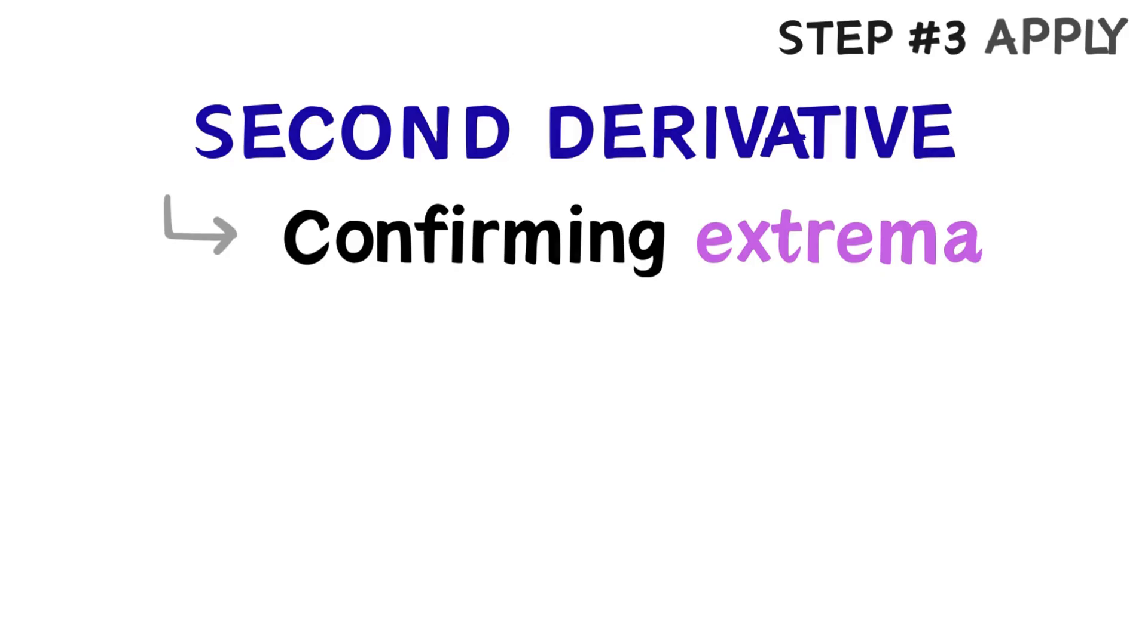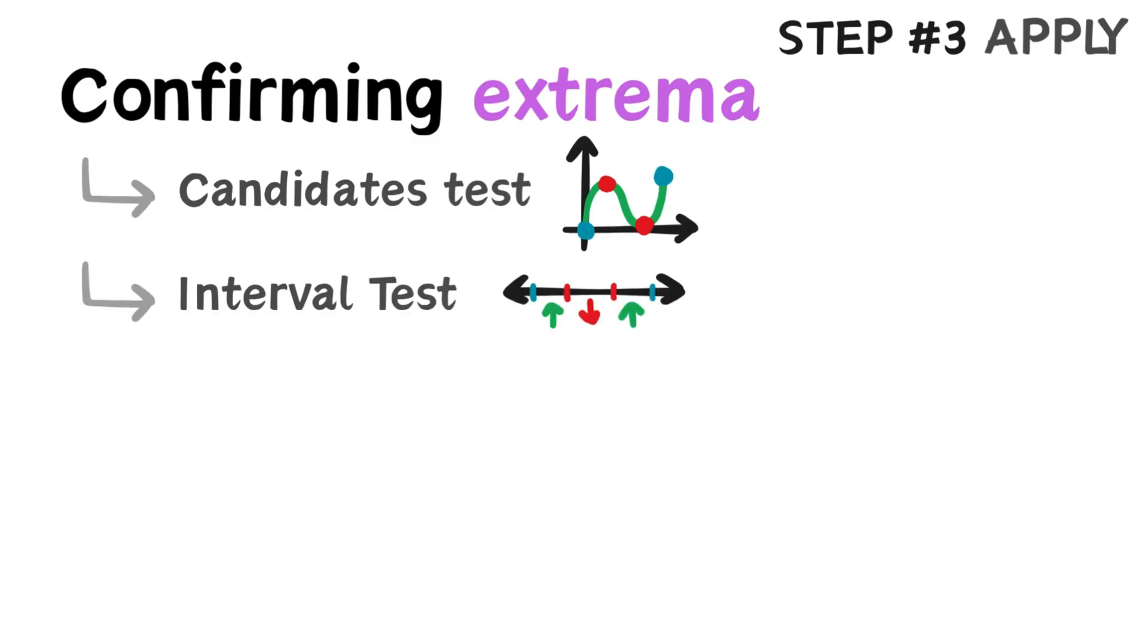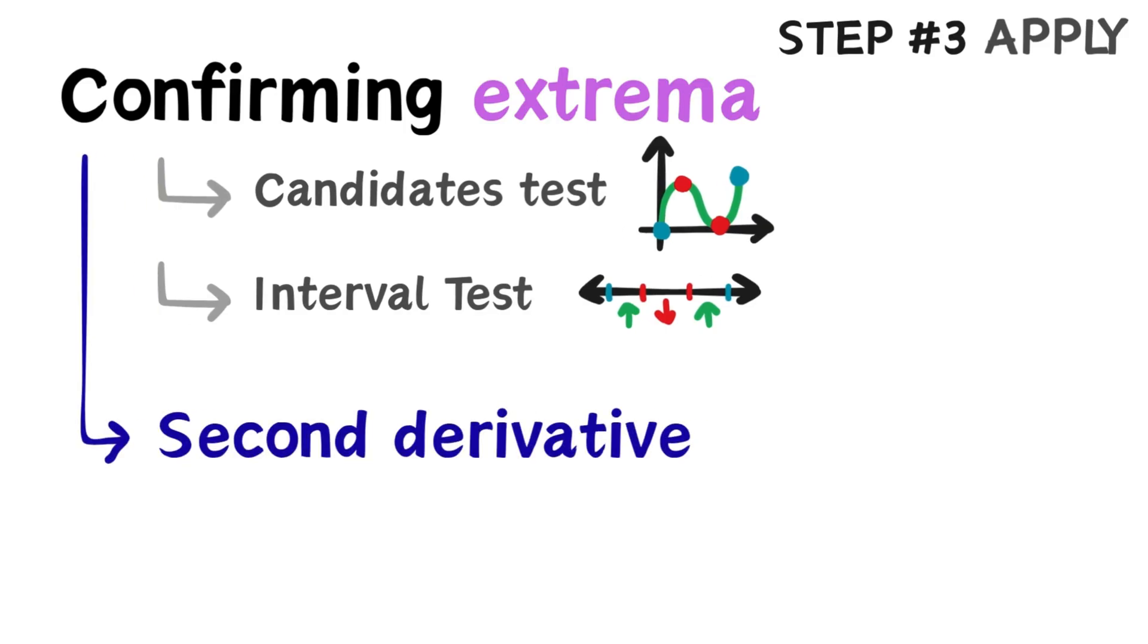The second derivative has a wide variety of uses. One use is confirming extrema. In previous videos, I've shown you how to find extrema by using the candidates test and then testing the intervals. But there is a way faster and way easier way to do this. You guessed it. Second derivatives.